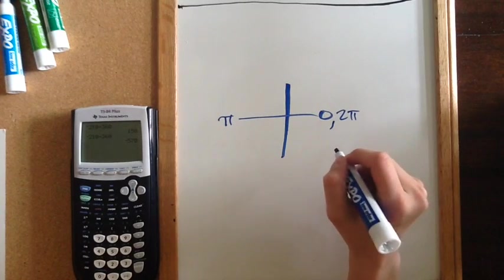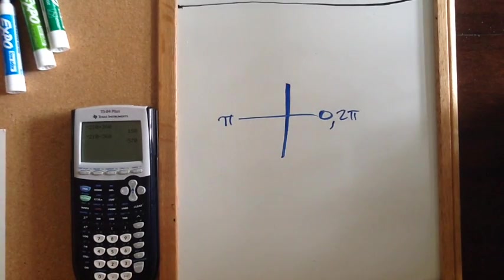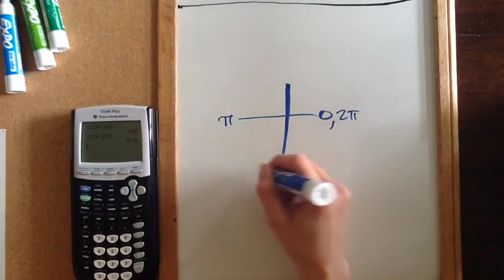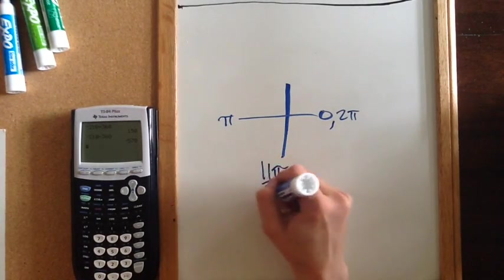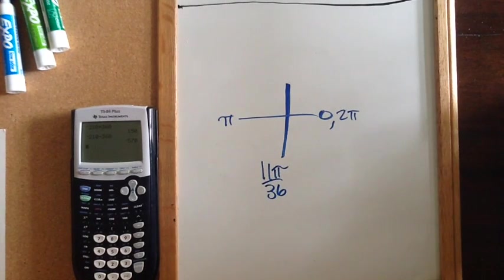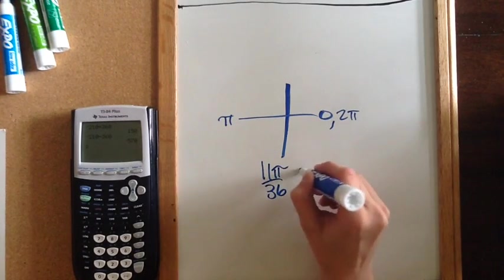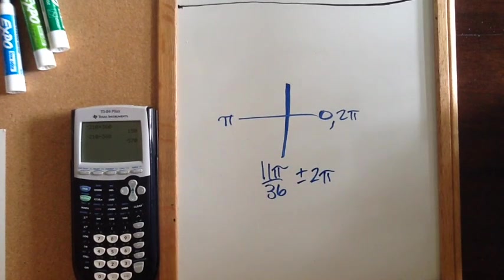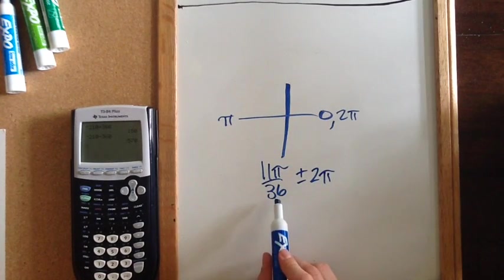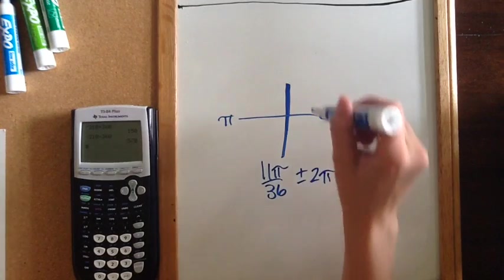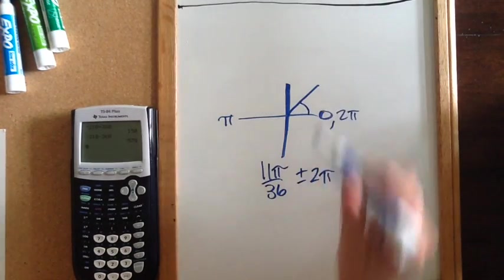So if I were to give you 11π/36, I want to add and subtract 2π. Well, half of 36 is 18, so this is less than half, so this is in our first quadrant right here.